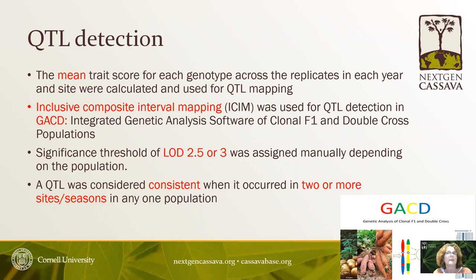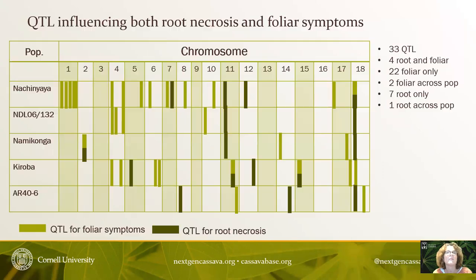For QTL detection, we used mean trait scores across replicates for each site and year. Inclusive composite interval mapping was used with the software GACD — the integrated genetic analysis software for clonal F1 and double cross populations — which is freely available. We used a significance threshold of LOD 2.5 or 3 depending on the population, where LOD 3 indicates the likelihood in favor of linkage is 1,000 times greater than against. A QTL was considered consistent when it occurred in two or more sites or seasons within any one population.